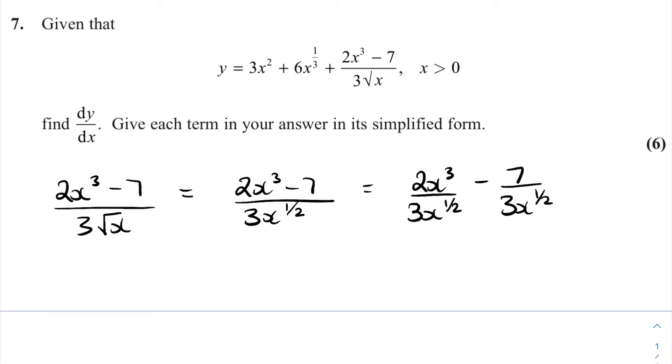So looking at that first term there I will have two thirds, two on the top three on the bottom, and I can simplify the x's by subtracting the powers. So x to the power of 3 divided by x to the power of half is x to the power of 3 minus a half, so 3 being 6 over 2 that will become 5 over 2 when I subtract the half.